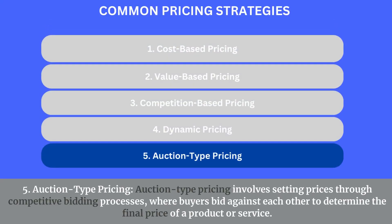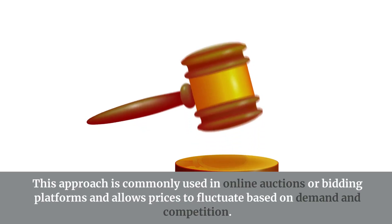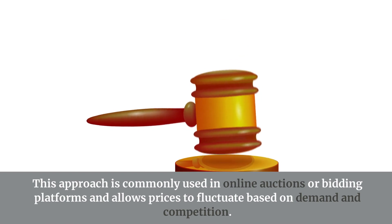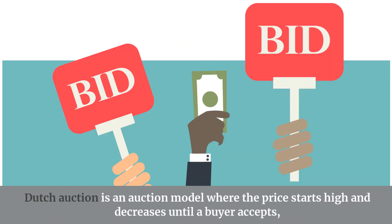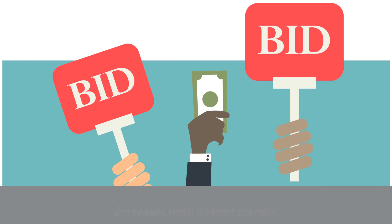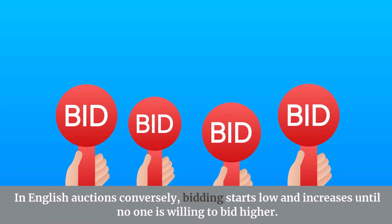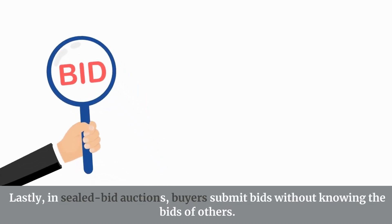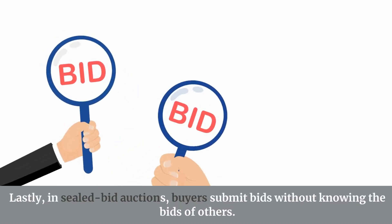5. Auction-type pricing involves setting prices through competitive bidding processes where buyers bid against each other to determine the final price. This approach is commonly used in online auctions or bidding platforms. In a Dutch auction, the price starts high and decreases until a buyer accepts. In English auctions, bidding starts low and increases until no one bids higher. In sealed-bid auctions, buyers submit bids without knowing the bids of others.